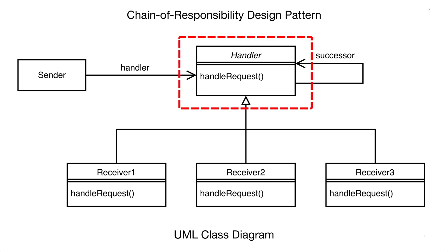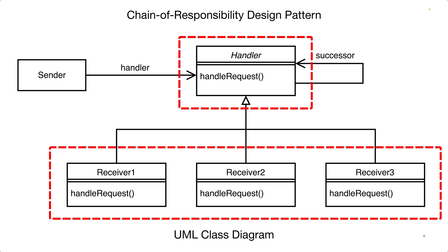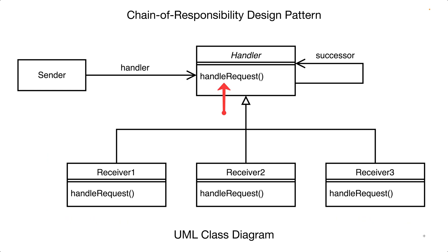In the chain of responsibility pattern we have at least one type of handler object, though we may have several types of handler objects with the interface for a handler object defined by a base class. Handler objects are capable of handling requests of some kind, maybe a request to carry out some computation or a request to create a log message. The handler objects are capable of maintaining a reference to another handler object, and when using the pattern we arrange these objects in a chain where each object references the next object in the chain, except the last object in the chain.